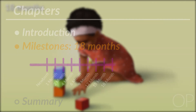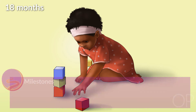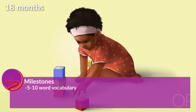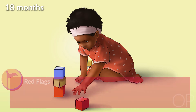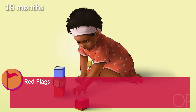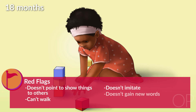Eighteen months: Her vocabulary is doubling — she can now say between five to ten words while doing plenty of jargoning. She is using her pointing ability to label at least one body part in addition to pointing to show someone what she wants. Now that she is making all of these gains, she starts using her language and motor skills to imitate those around her, often trying to help out around the house. You might find her stacking three blocks or starting to run. Red flags at 18 months include not pointing to show things to others, can't walk, not imitating, not gaining new words, or not noticing when caregiver leaves or returns.